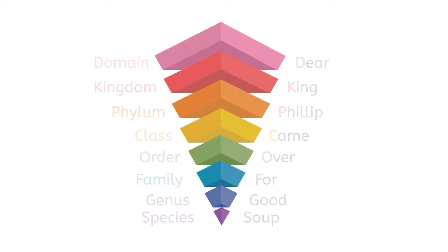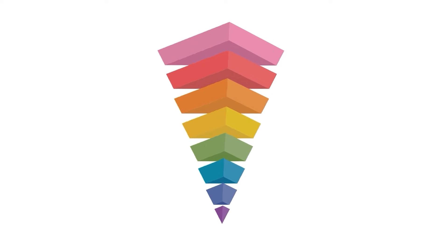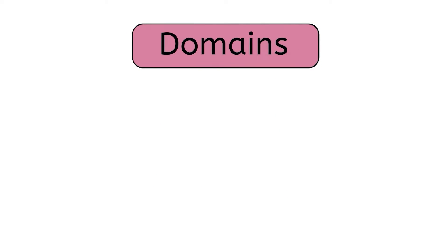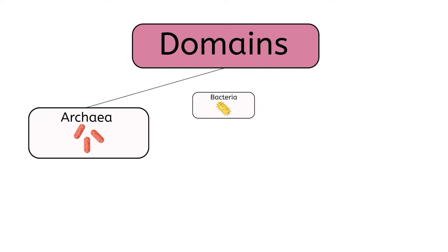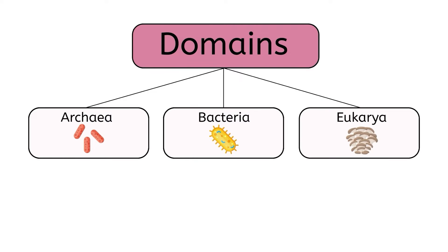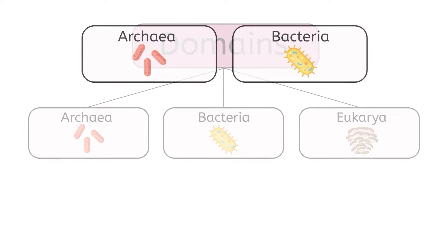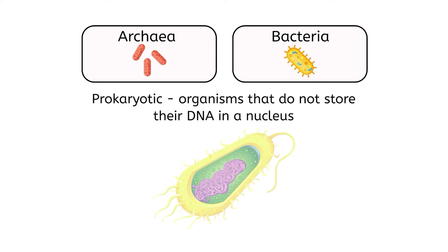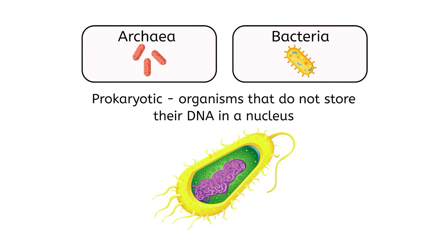Let's take a closer look at the taxonomic system, starting with the broadest level: domain. There are three domains — archaea, bacteria, and eukarya. Archaea and bacteria are both prokaryotic, which means that they do not store their DNA in a nucleus, but they have key differences as well, such as the structure of their DNA.